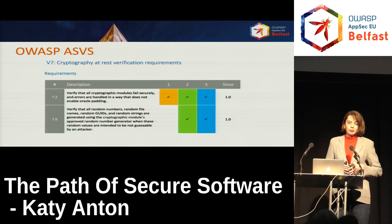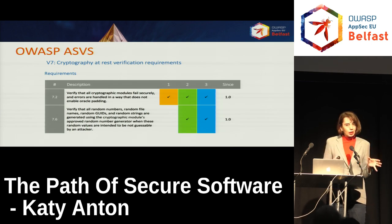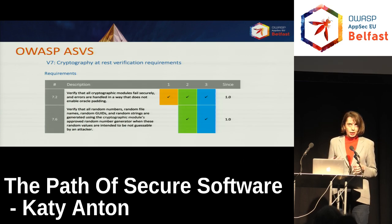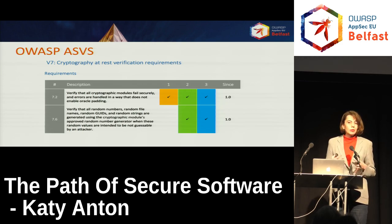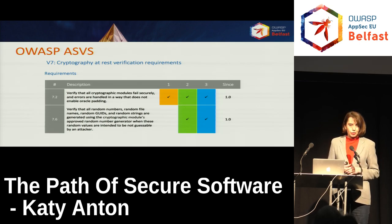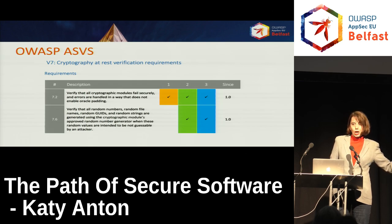Here is an extract of how verification requirements look in OWASP ASVS, where each requirement is clearly marked if it applies to level one, two, or three. I particularly chose the cryptography requirements, where at 7.6, it states that when your software needs random number generators, you should use cryptographically approved random number generators. If these verification requirements had been used in the case of the slot machine software, that vulnerability could have been avoided.